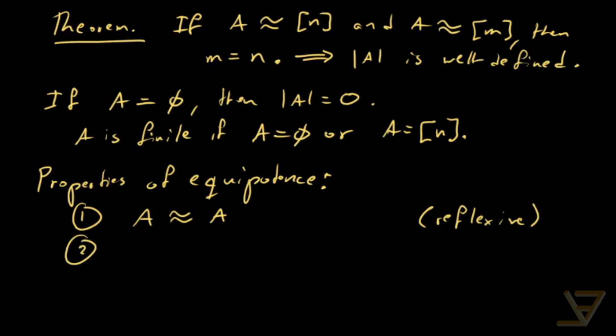The second thing is that if A is equipotent with B, then B is equipotent with A, and we call that symmetry.